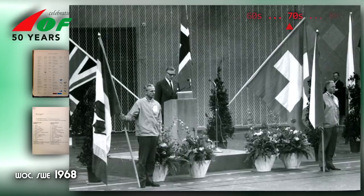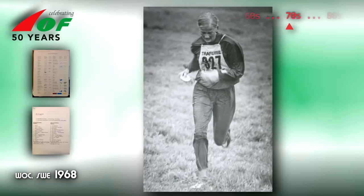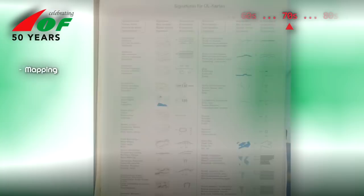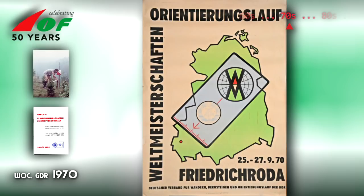Since then, all maps used in IOF events have been drawn in the same way, regardless of where in the world the event is organised. In 1971, the IOF became bilingual, with the introduction of English as the second official language.